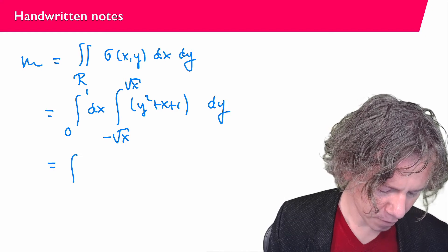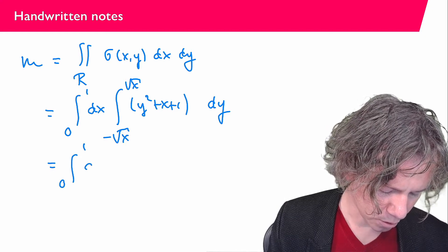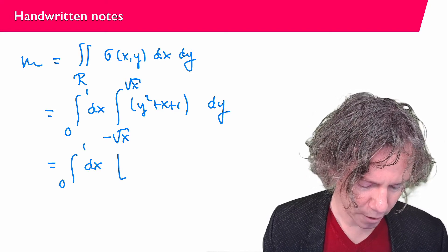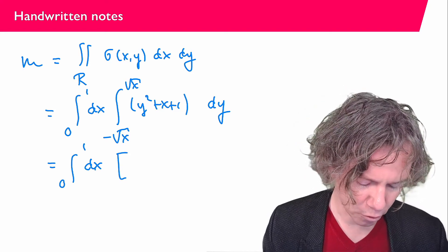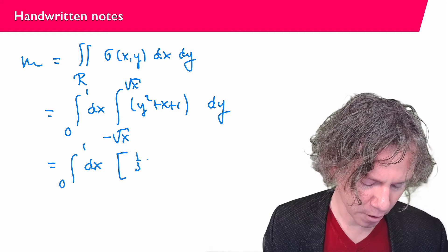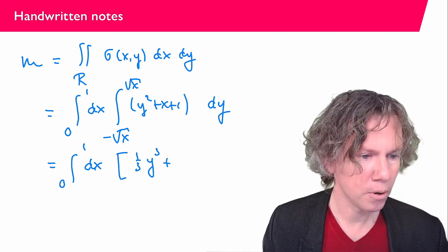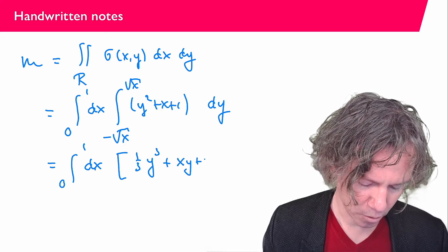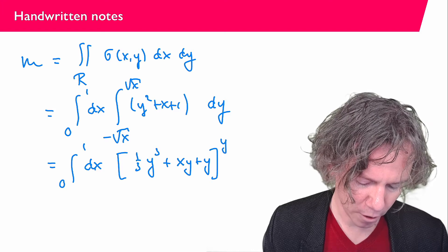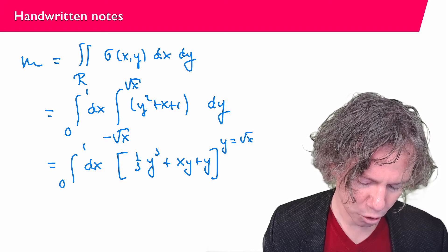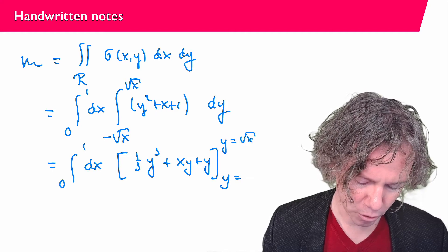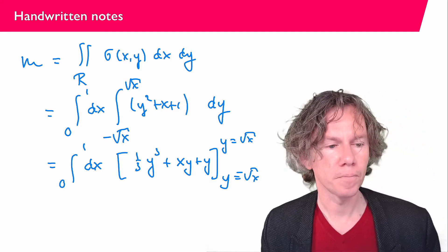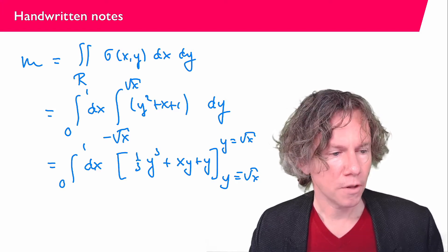So we have integral from 0 to 1 dx. I'm going to integrate this thing with respect to y. So the first term is y to the power of 2. That's going to be 1 over 3. So that's going to be 1 over 3 y to the power of 3 plus x y plus y. And for y I'm going to plug in square root of x minus square root of x like this.